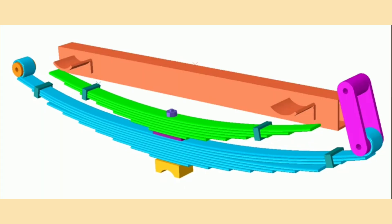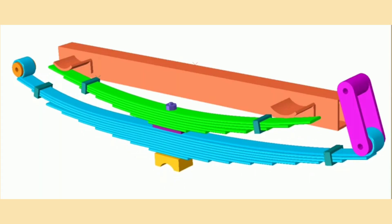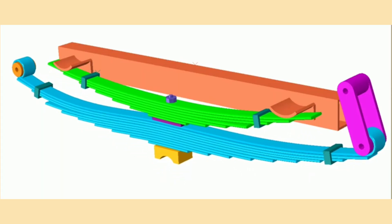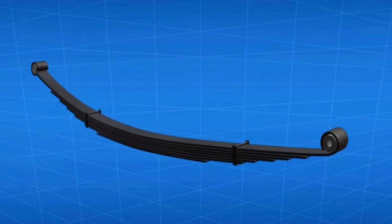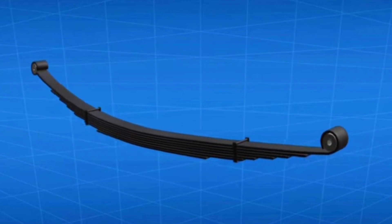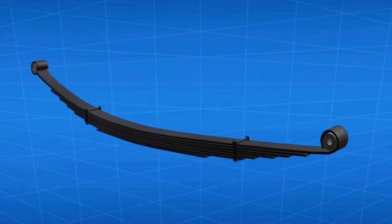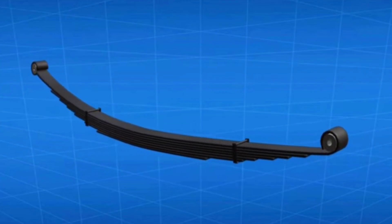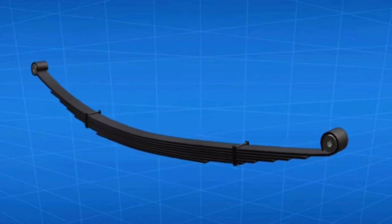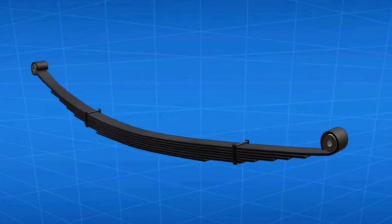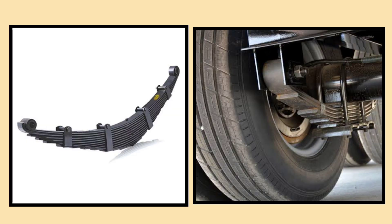Next is leaf spring suspension, typically used in trucks and heavy duty vehicles. Comprising several layers of metal strips, it provides strength and flexibility, making it ideal for carrying heavy loads, though it may lack ride comfort.